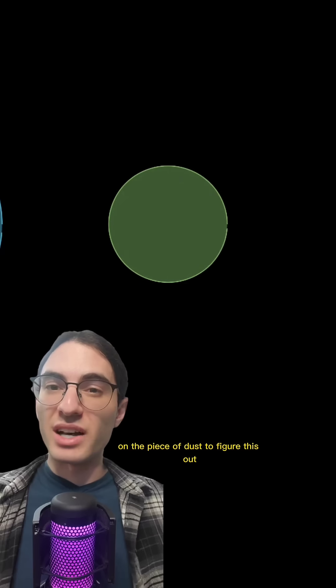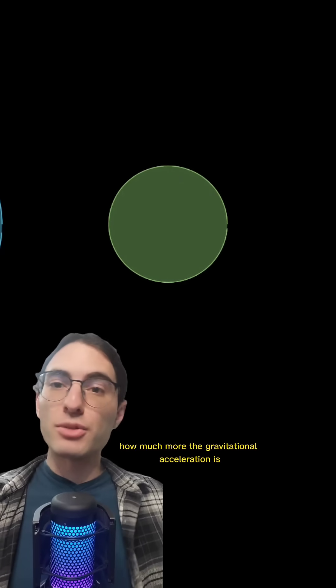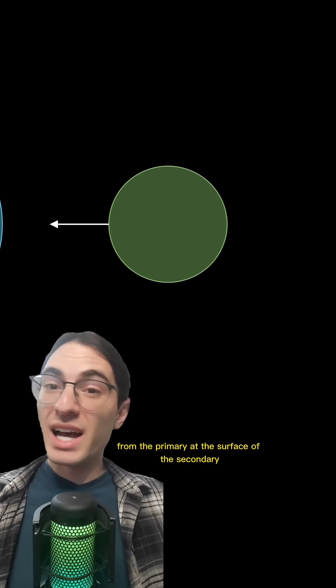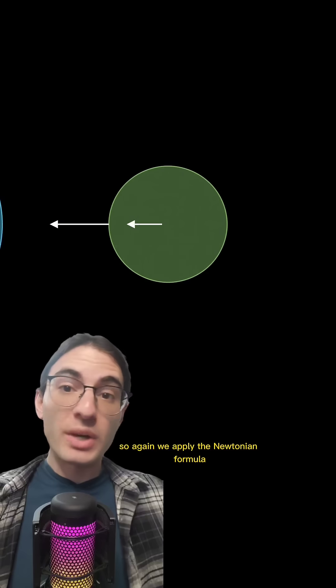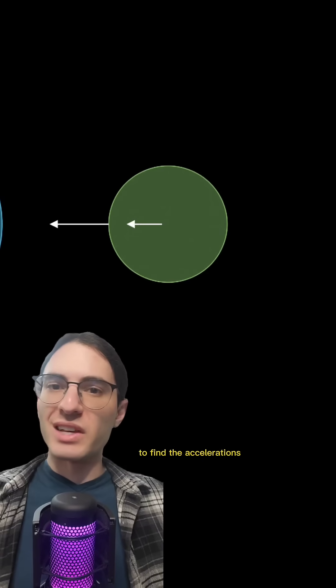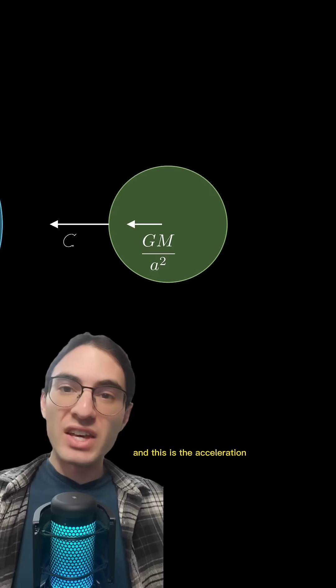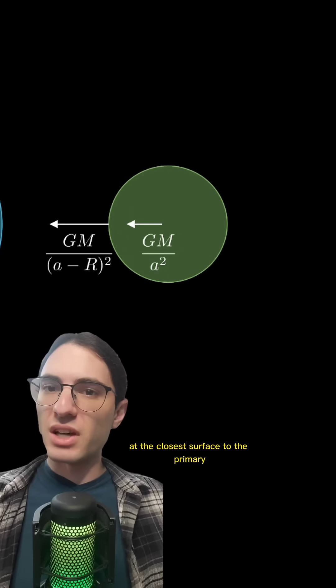To figure this out, we need to know how much more the gravitational acceleration is from the primary at the surface of the secondary as compared to at its center. So again, we apply the Newtonian formula to find the accelerations. This is the acceleration at the center of the secondary, and this is the acceleration at the closest surface of the primary.